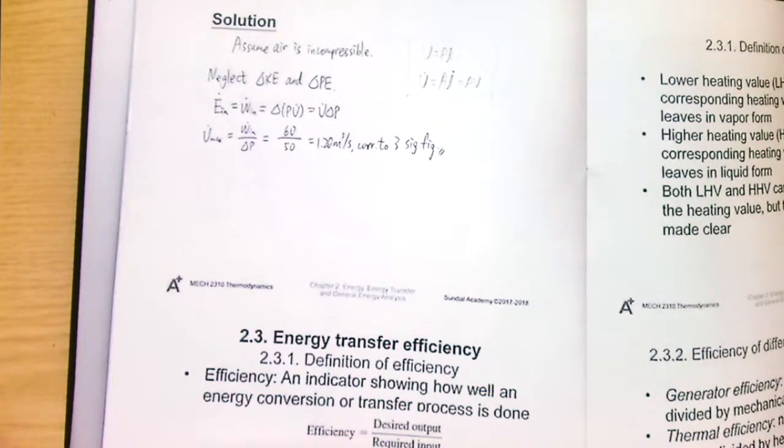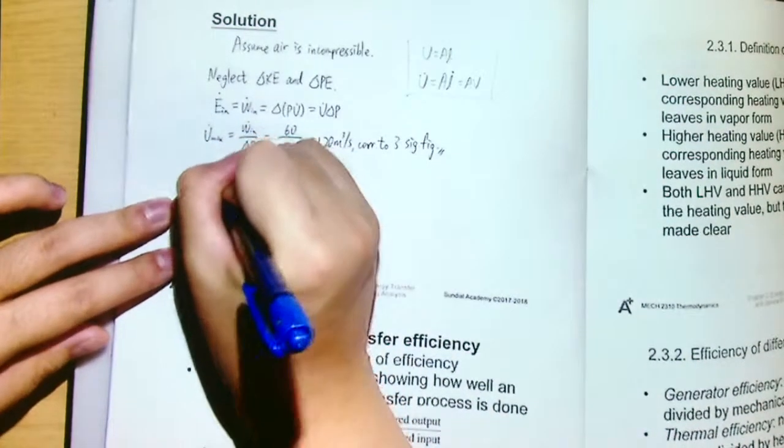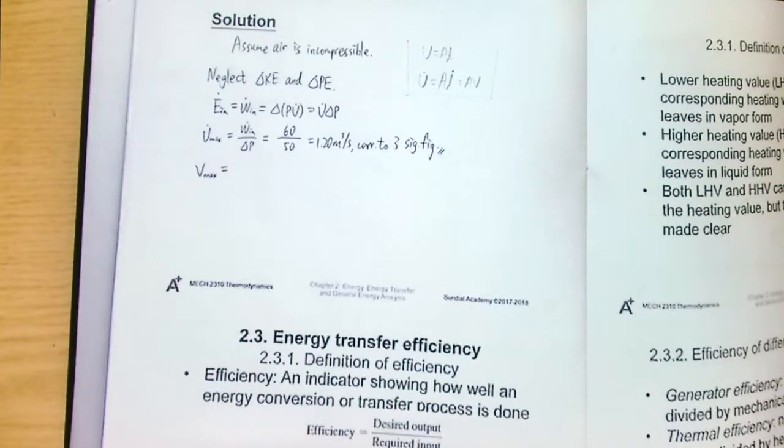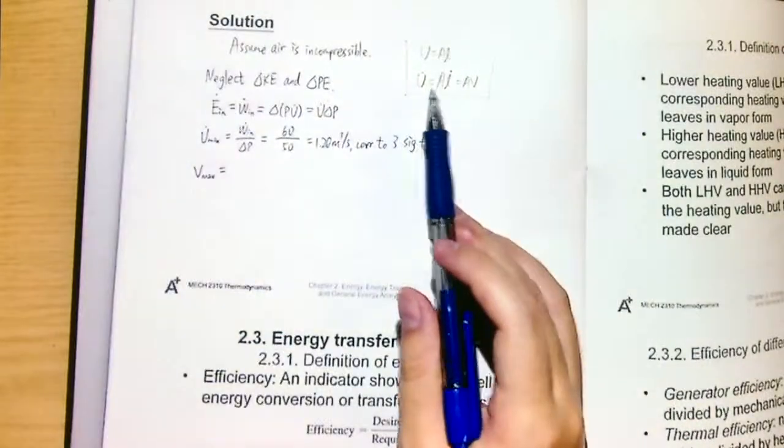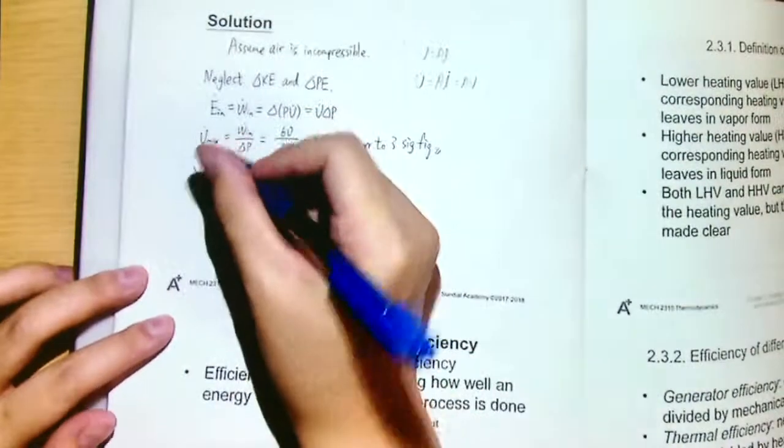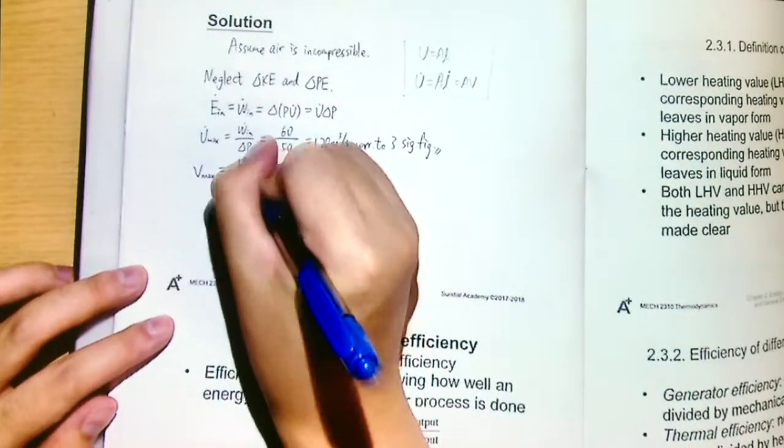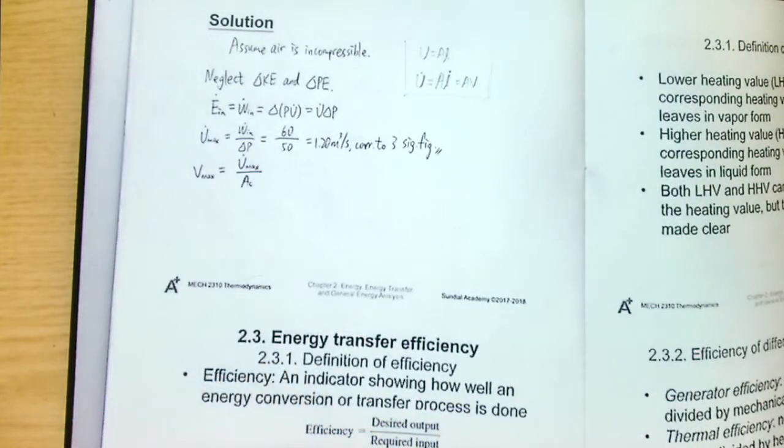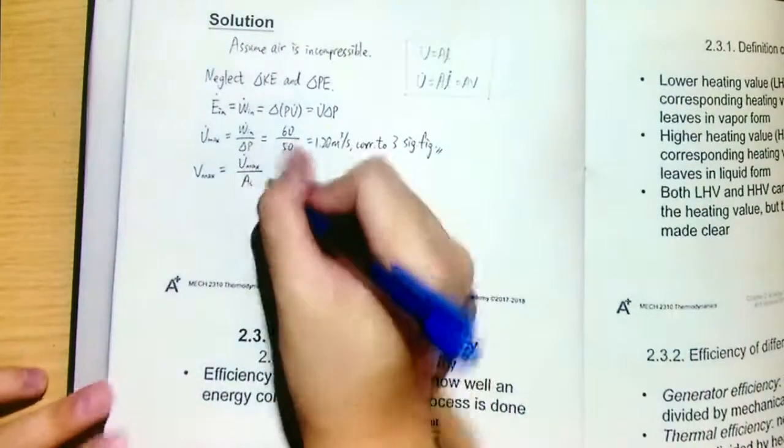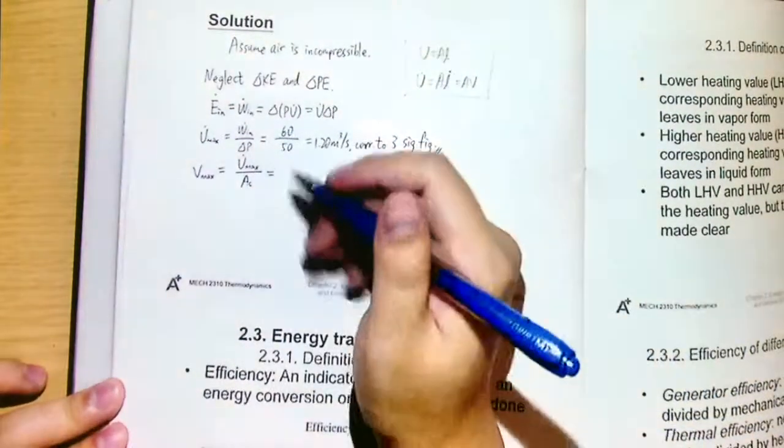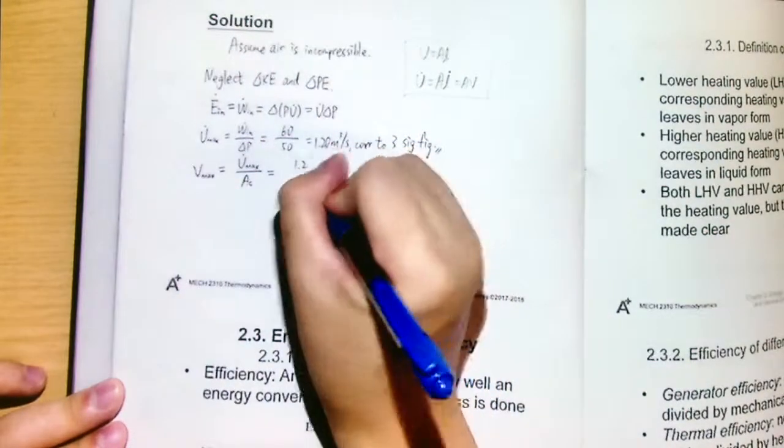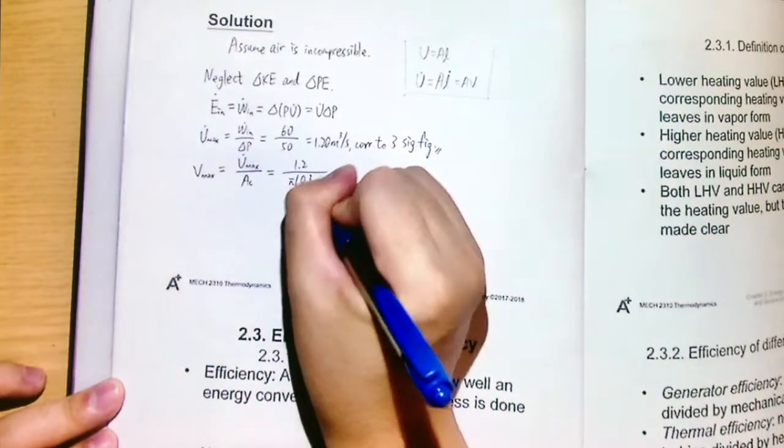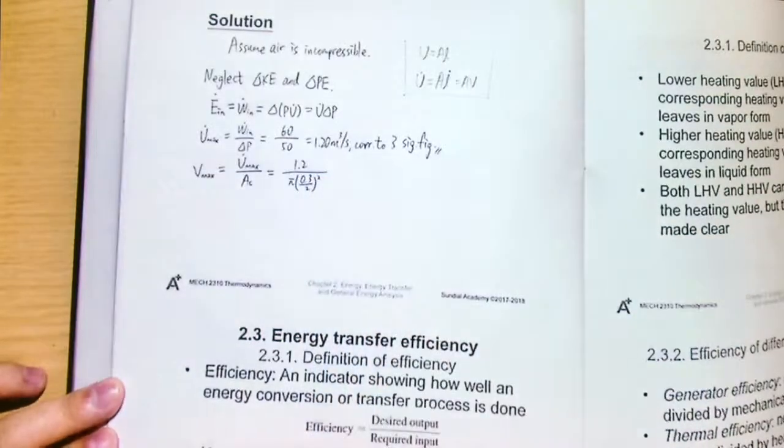And then we will also find out the V maximum. What's the V maximum? So we will use this formula: V dot equal to A times V. So that it will become V max dot divided by the cross section area. I will use a subscript C to denote this cross section area.